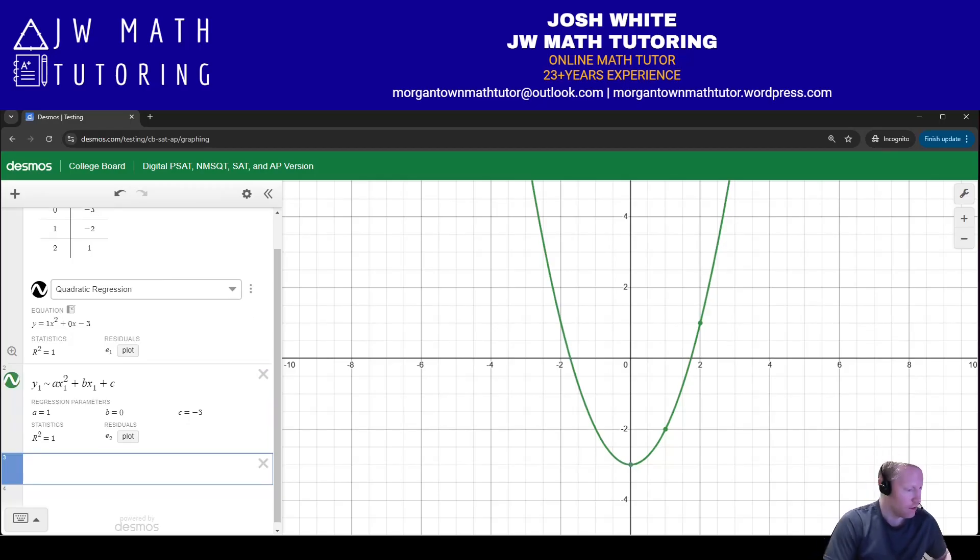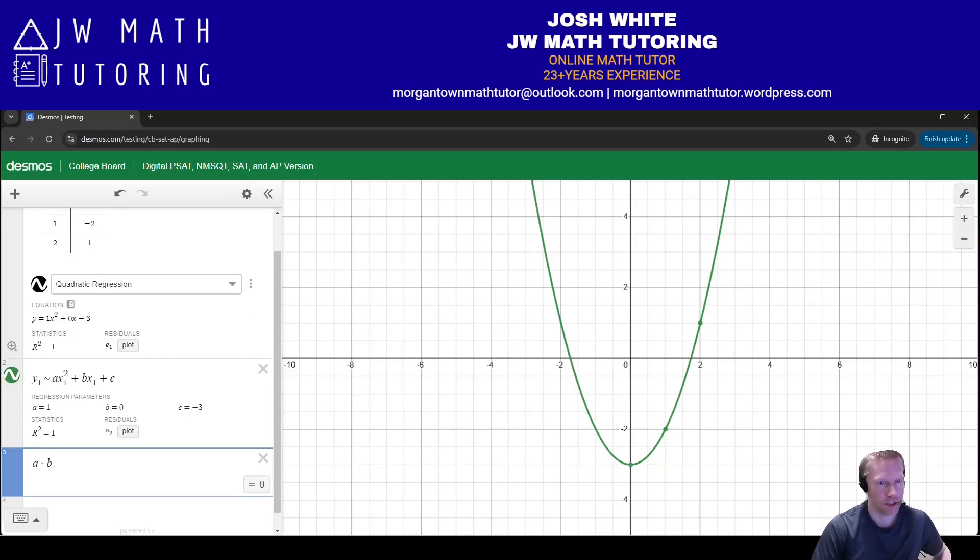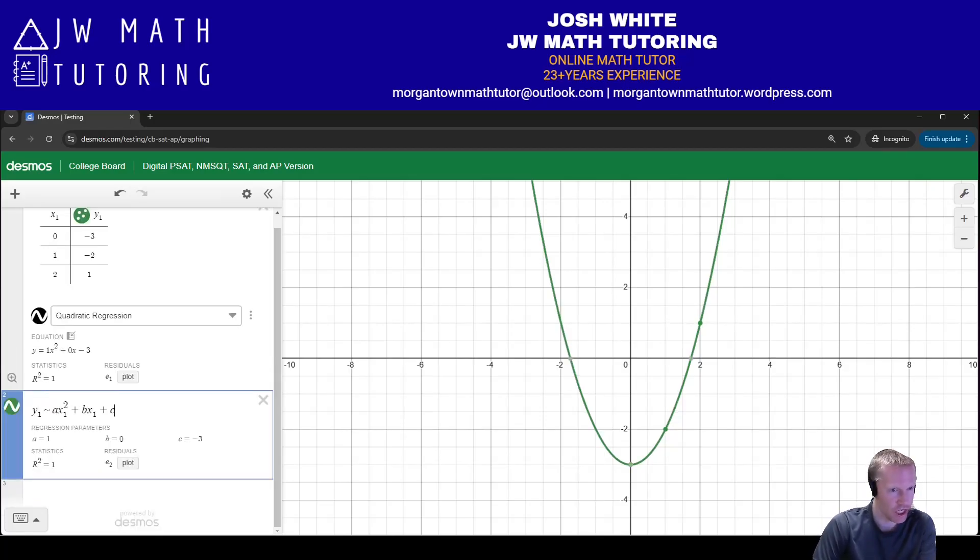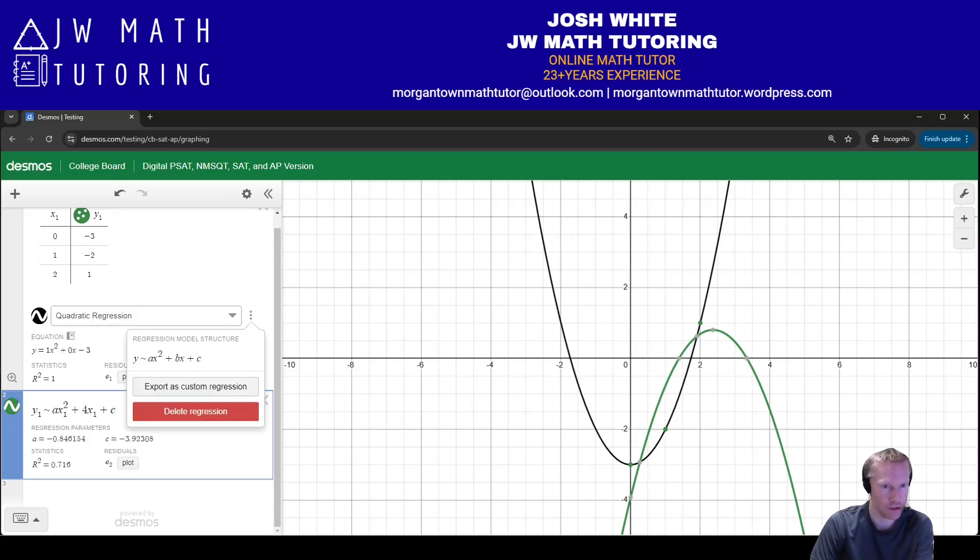So if you needed to calculate a times b, if the question asked for that, or what is a plus c, or a plus b plus c. And also if you needed to just change something, you know what I mean? If you didn't want to retype the whole thing, you just wanted to change something and just try it, whatever, setting b equal to four, or b equal to five, or changing the c value, or whatever. You can do that as well, once you can click these icons and then click export as custom regression.